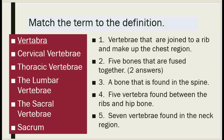Number two: five bones that are fused together — there can be two answers for this. Number three: a bone that is found in the spine. Number four: five vertebrae found between the ribs and hip bone. Number five: seven vertebrae found in the neck region.